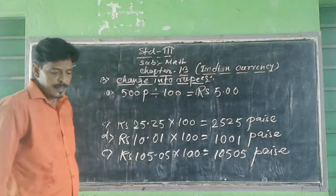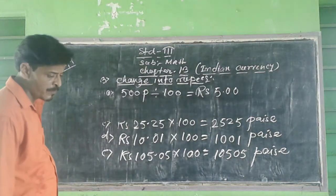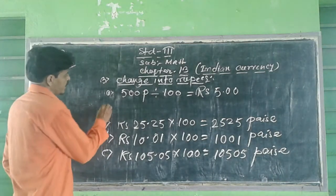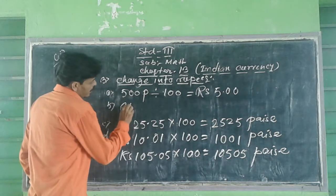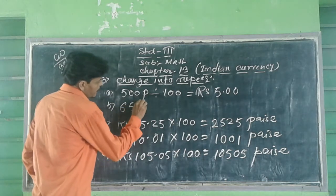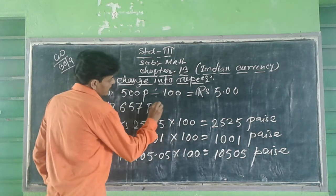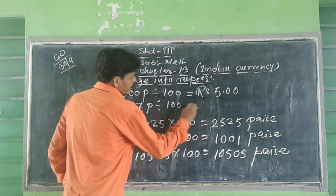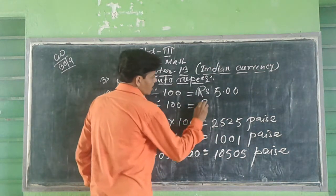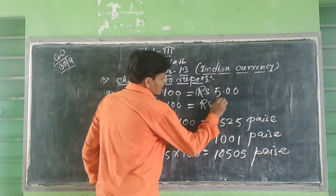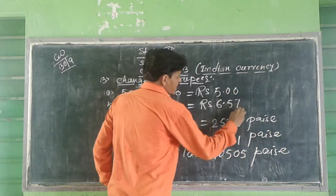Next, Question Number 3b: 657 paise. 657 paise divide by 100 equal to Rupees 6.57.